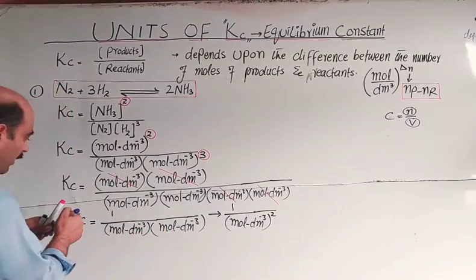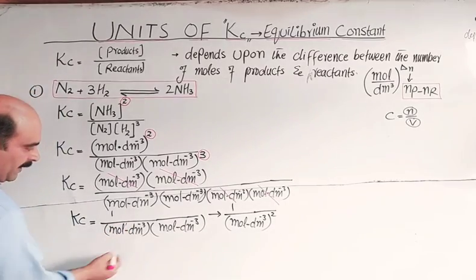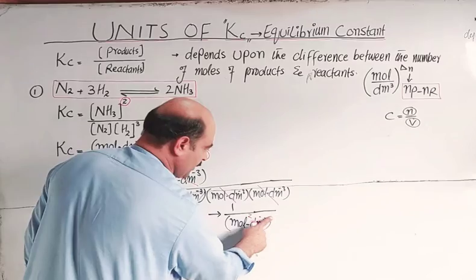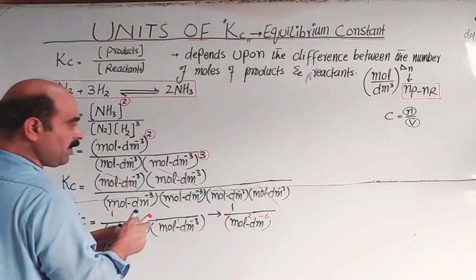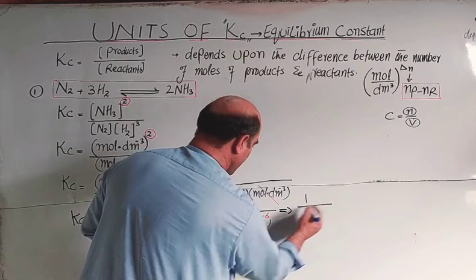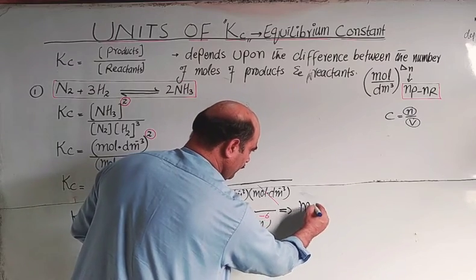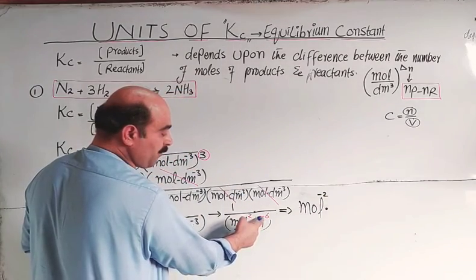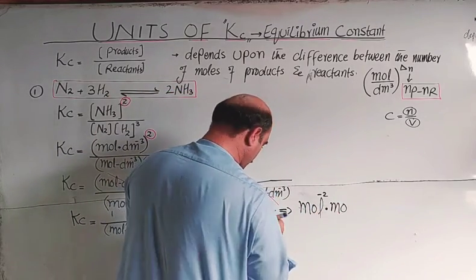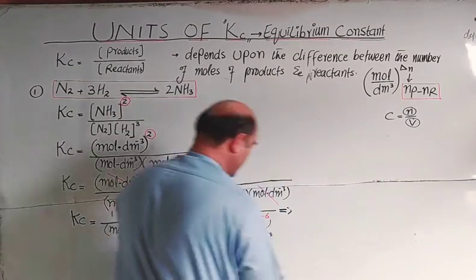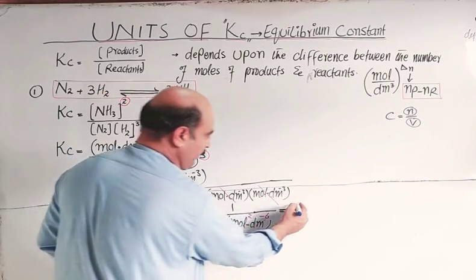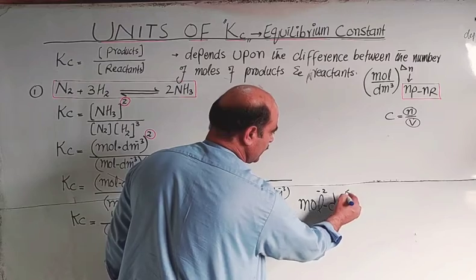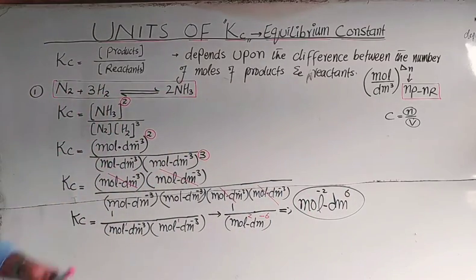The mole squared with inverse gives mole to the power minus two, and decimeter cube to the power minus six becomes dm⁶ in the numerator — that is, dm⁶ as a positive power. So the unit of Kc for this reaction is mole⁻² dm⁶. This is the unit of Kc for the N₂ + 3H₂ ⇌ 2NH₃ reaction.